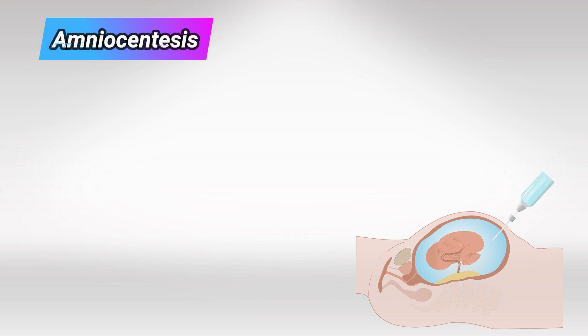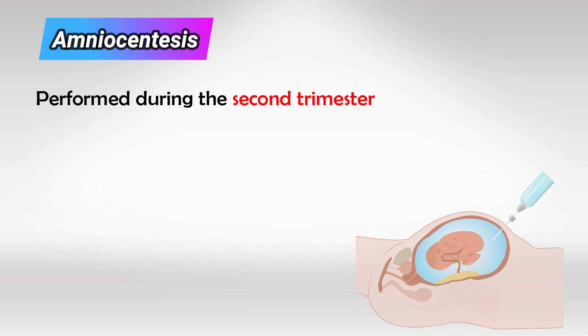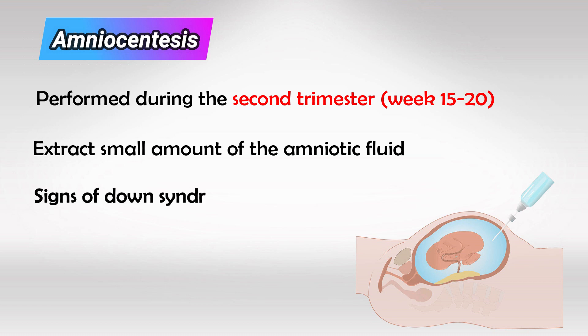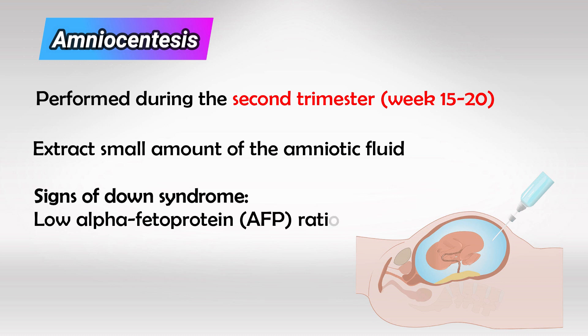The final test is amniocentesis, which is also invasive but not as much as chorionic villus sampling. We do this at the second trimester, around week 15 all the way to week 20. We simply insert a needle and take some of the fluid around the baby. By analyzing the fluid, we can give a probability of having Down syndrome. If the results show a low alpha-fetoprotein ratio between the amniotic fluid and the maternal serum, this indicates a very high chance of having Down syndrome.